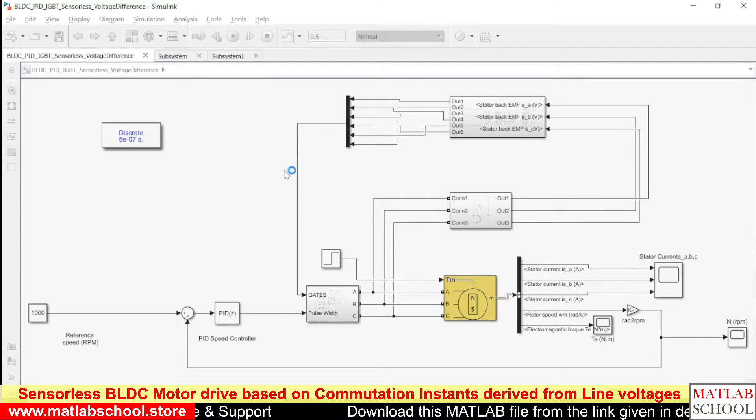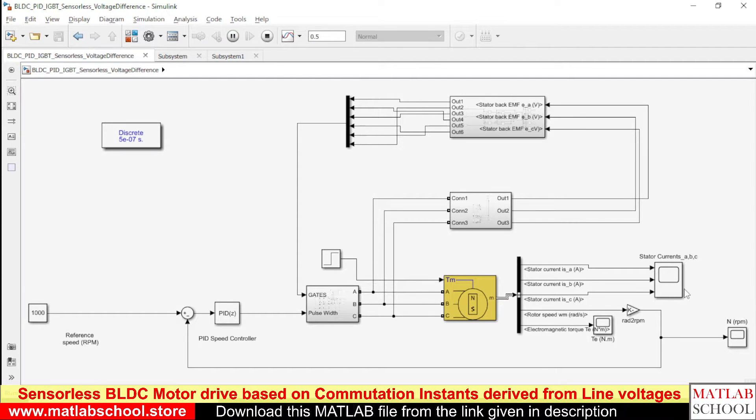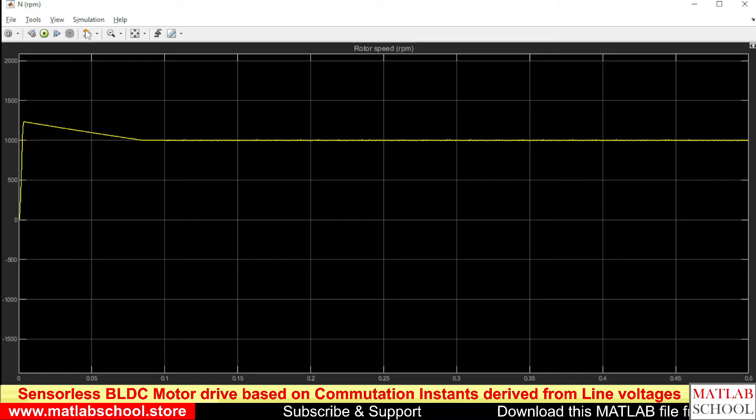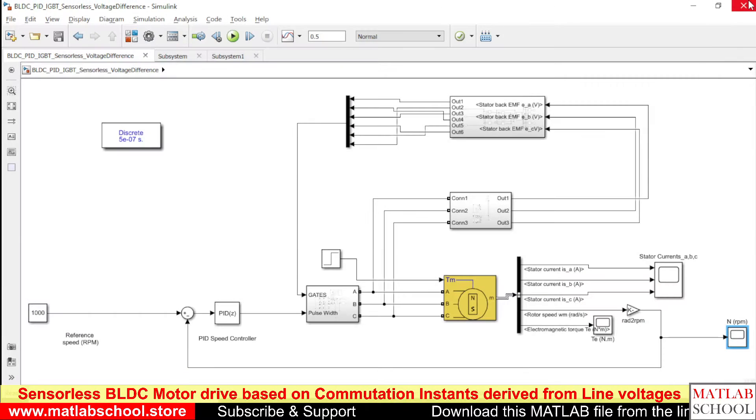So I am simulating the model for a duration of 0.5 seconds. The model is running. See here it is settling exactly at 1000 RPM. Yes, it is settling exactly at 1000 RPM.